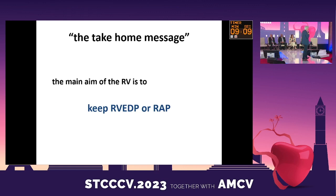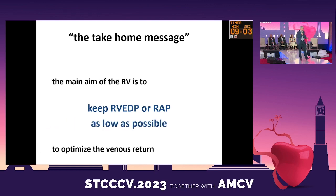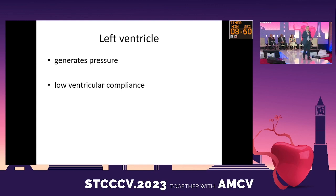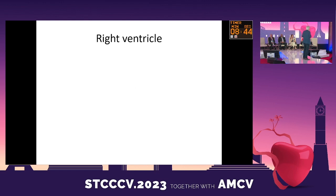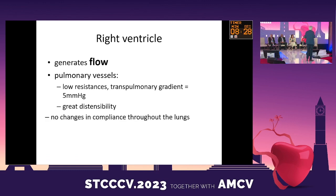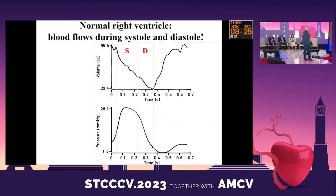La fonction du ventricule droit est de maintenir la pression auriculaire droite aussi basse que possible pour optimiser le retour veineux. Le ventricule gauche, lui, est là pour générer de la pression. Le ventricule droit génère du débit en aspirant le sang de la périphérie. Il y parvient grâce à une chance extraordinaire : les résistances pulmonaires sont très très faibles, quasi nulles, donc tout ce que le ventricule droit génère comme débit traverse le poumon sans aucune difficulté.